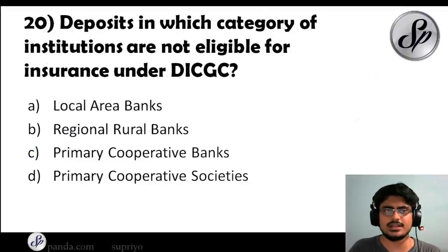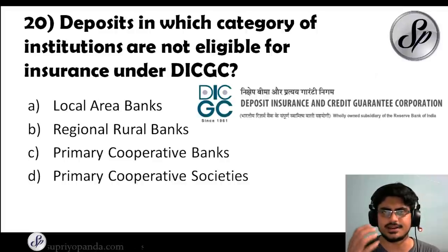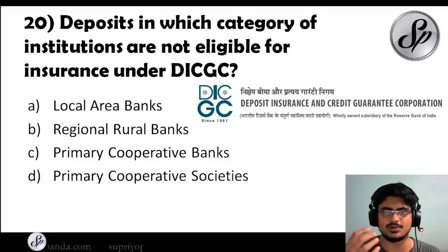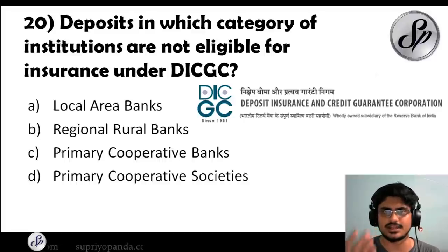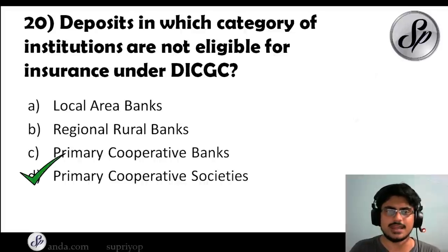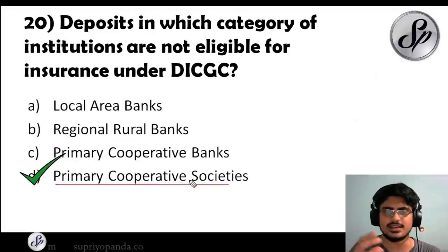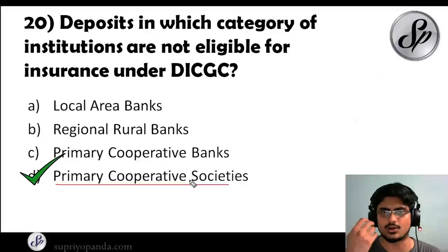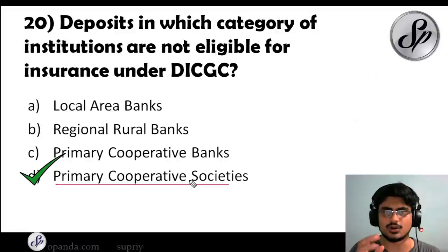Question twenty: deposits in which category of institutions are not eligible for insurance under DICGC? DICGC is the Deposit Insurance and Credit Guarantee Corporation, which currently insures up to 5 lakhs in every bank — as announced in the budget. The answer is primary cooperative societies. These are the only societies that take deposits but are not insured by DICGC. Make sure you cover DICGC very well this year.